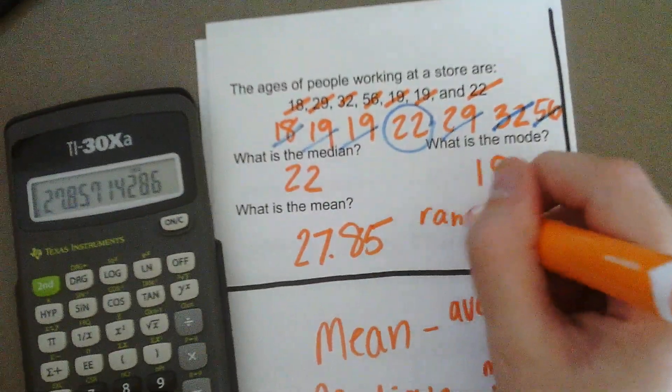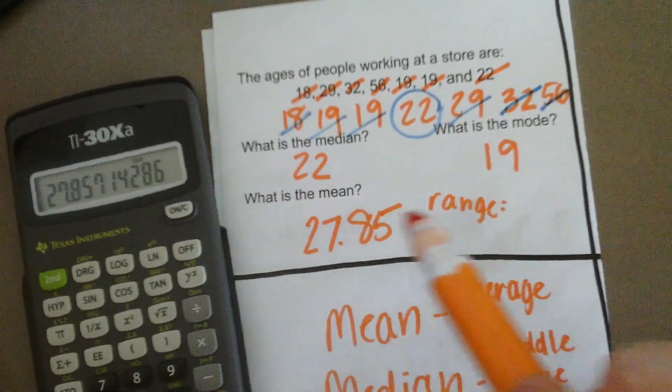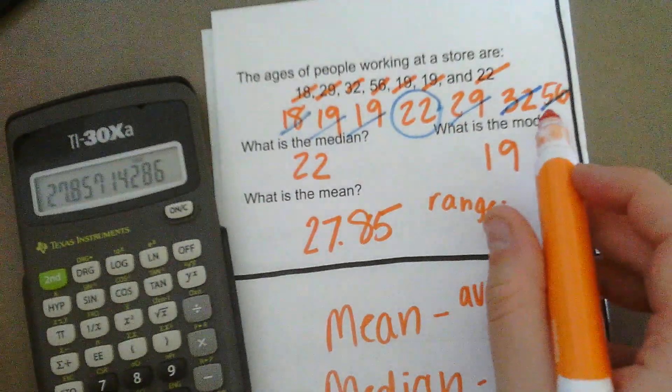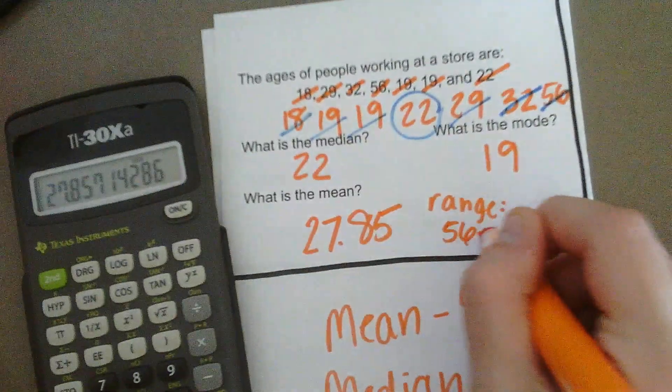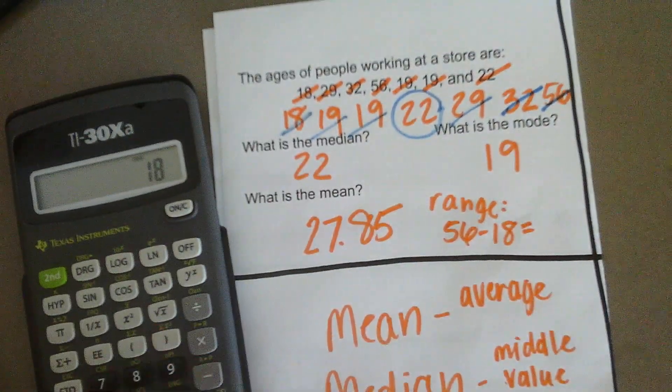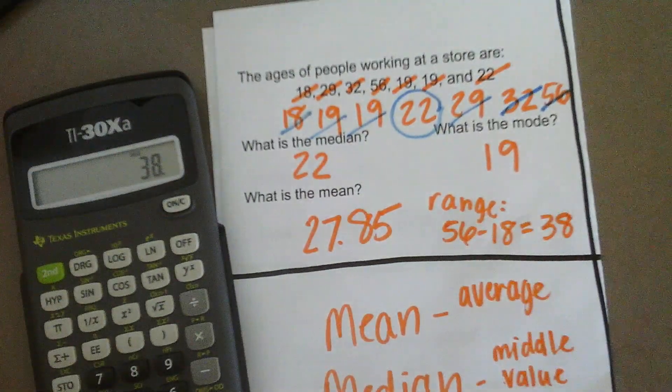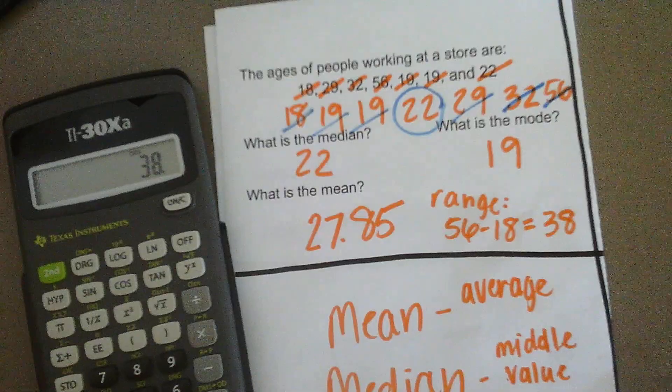Lastly, let's find our range. Our range is the difference of our greatest and our least number. So, our range is 56 minus 18, or 38. So, there's a 38-year range in the ages of the workers at the store.